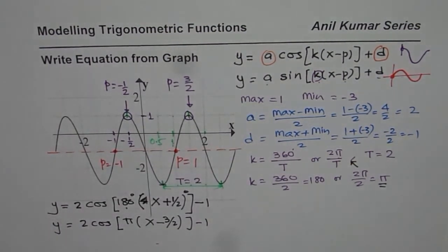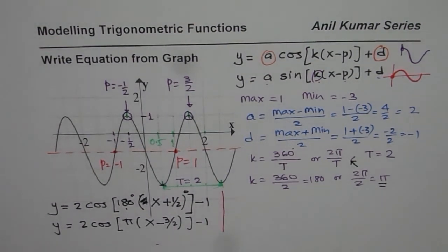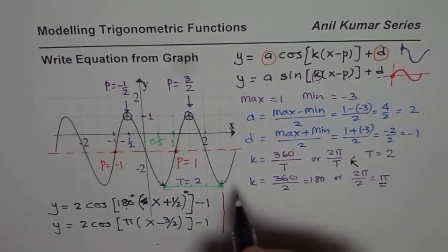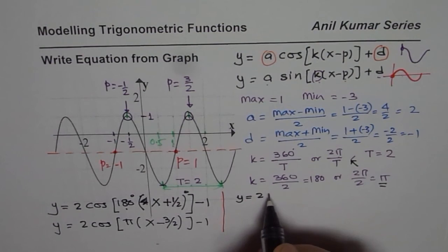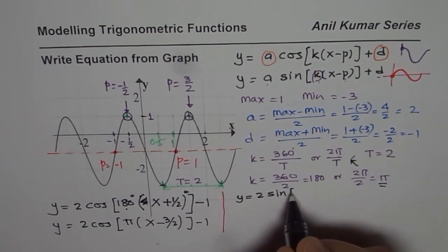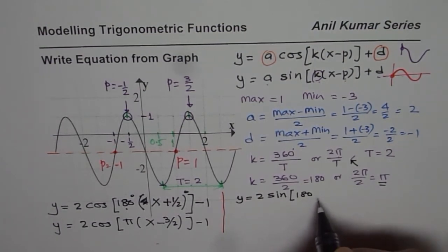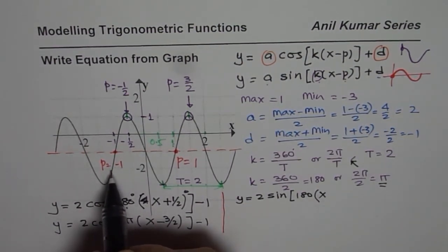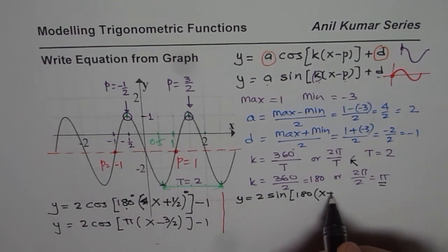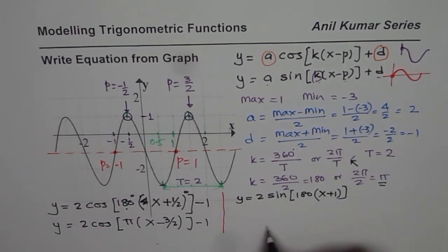So we can write the equation as y equals 2. You can also pause the video, write the final answer and check with mine. So we get 2 sine this time, write 180 for k. So I am writing in degrees and x. First one I am using this point. Minus of minus 1 will give me plus 1. Do you get the idea? And then the rest is the same.